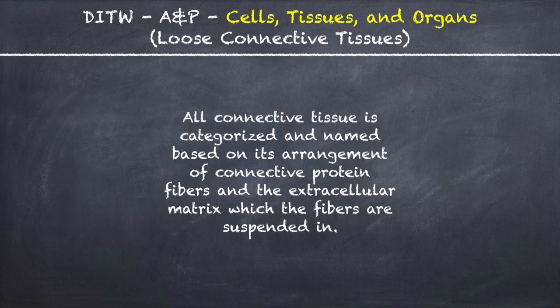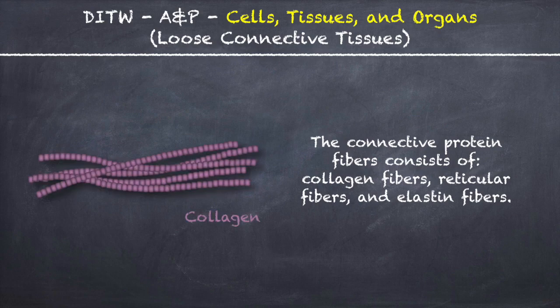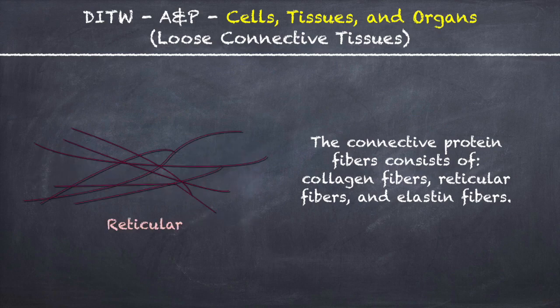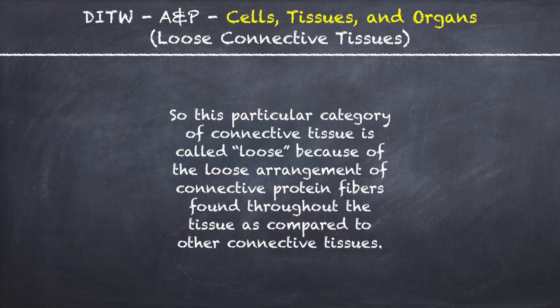All connective tissue is categorized and named based on its arrangement of connective protein fibers and the extracellular matrix which the fibers are suspended in. The connective protein fibers consist of collagen fibers, reticular fibers, and elastin fibers. This particular category is called loose because of the loose arrangement of connective protein fibers found throughout the tissue as compared to other connective tissues.